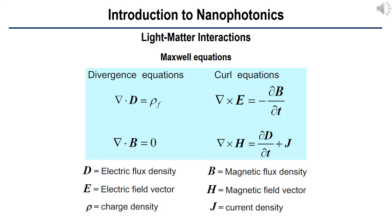To start with, it is very instructive to learn about Maxwell equations. I believe many of you have already learned about these equations in detail. However, I would like to revisit the Maxwell equations. The Maxwell equations are composed of four different equations on the electric and magnetic field — two divergence equations and two curl equations. Maxwell equations can be written in integral form, but I will keep the differential equation expression for mathematical convenience, using SI unit systems.